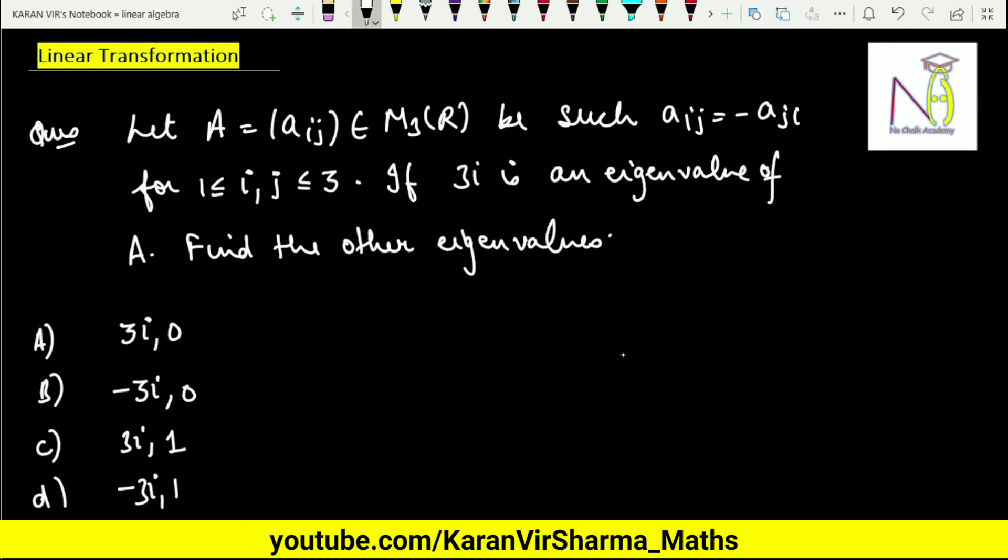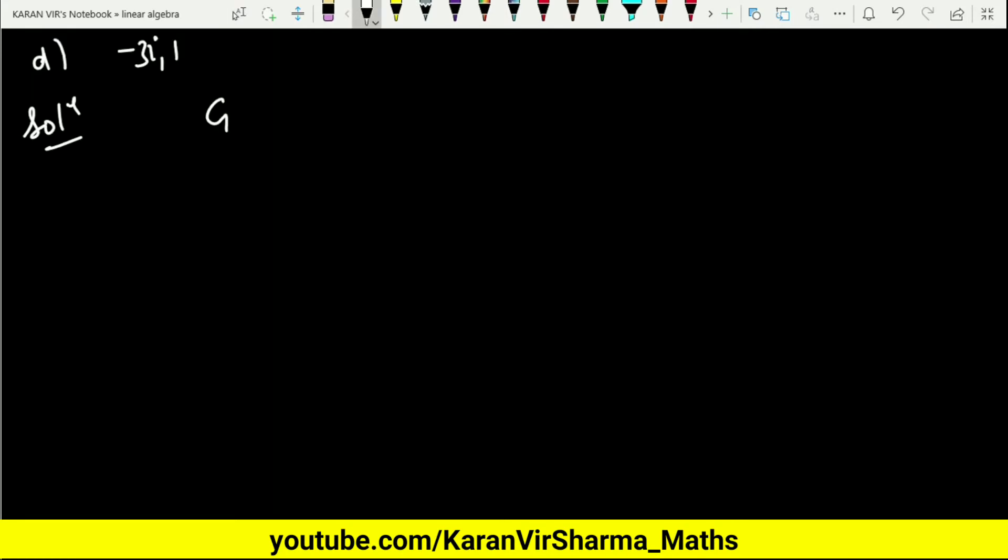The options are: 3i,0; minus 3i,0; 3i,1; and minus 3i,1. Since it is given that aij equals minus aji, it implies that A is a skew-symmetric matrix. And we are aware of the properties of a skew-symmetric matrix.